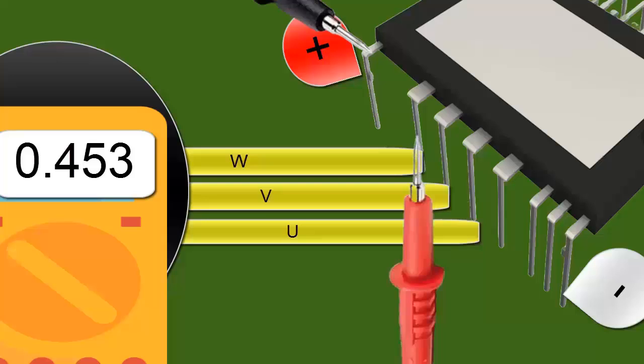10. The measurement obtained between the negative supply and each pin UVW should yield practically the same reading.